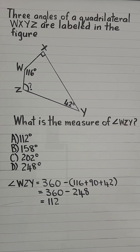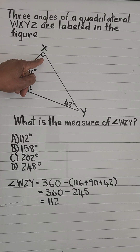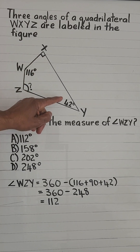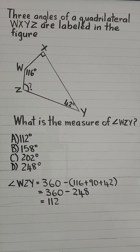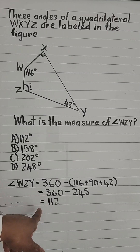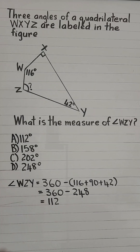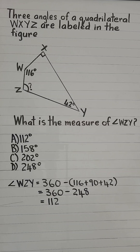360 minus (116 plus 90 plus 42) is equal to 360 minus 248, and that is equal to 112. The correct choice is A.